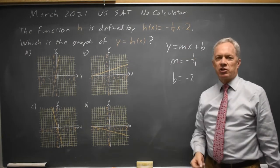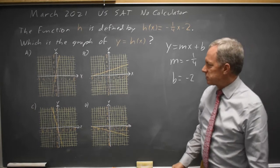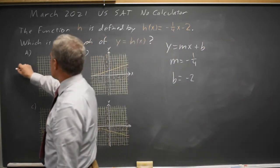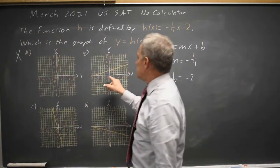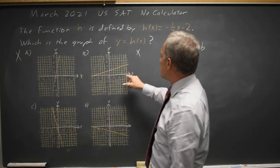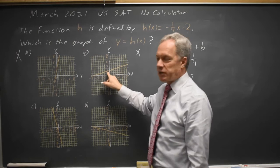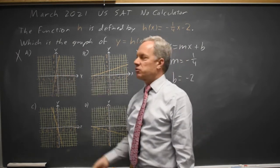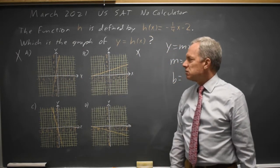So I'm going to find the option that has an intercept of negative two. Choice A is positive two, that's not correct. Choice B also has an intercept at positive two. This is the y-intercept where the graph crosses the y-axis and both A and B go through the y-axis at y equals two.